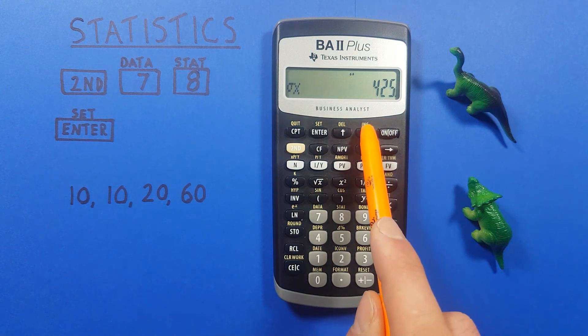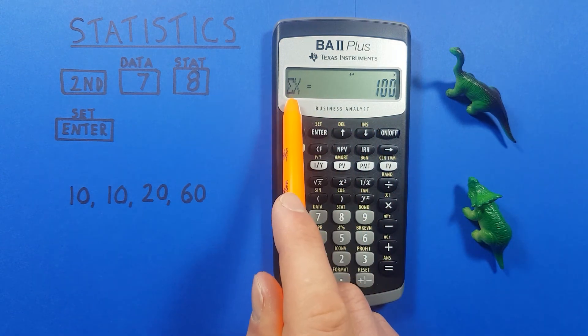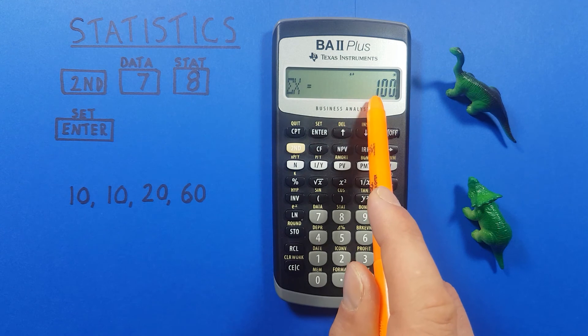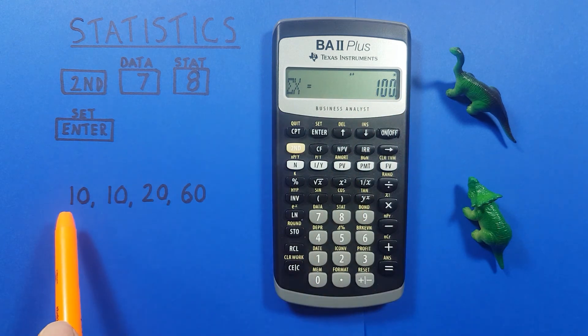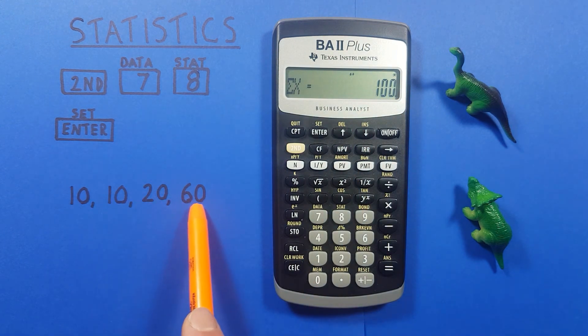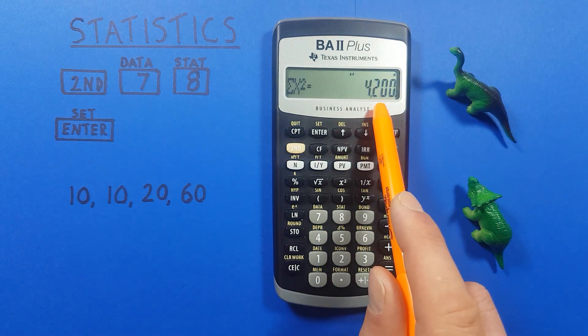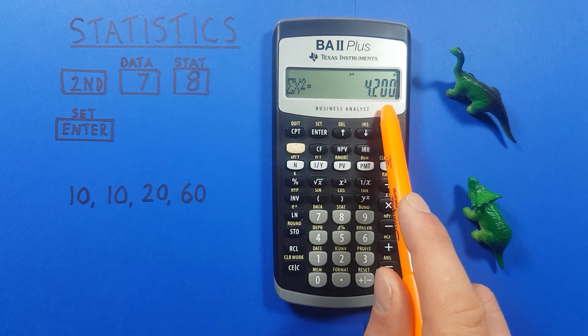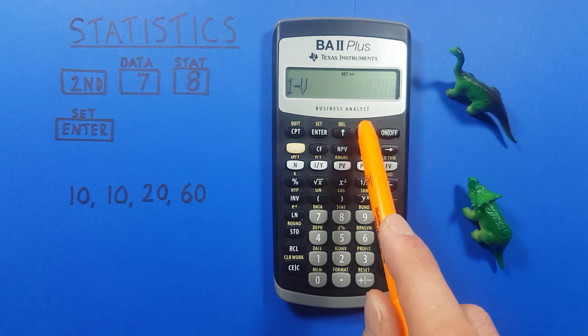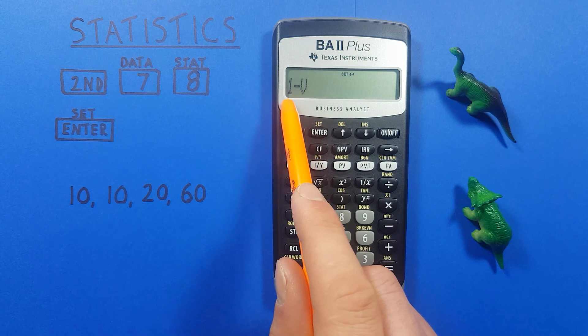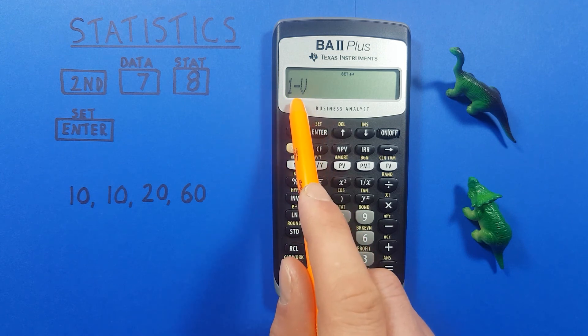If we press the down key again we get a sum of our variables which equals 100 which makes sense. Down again and we get a sum of squares of 4200. If we press down one more time we're back to the start of one variable statistics where we started.